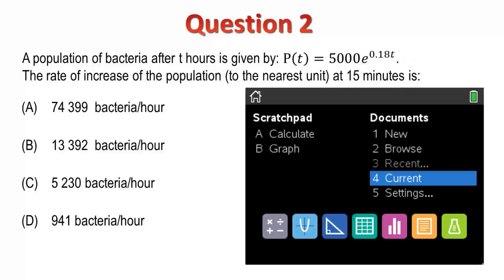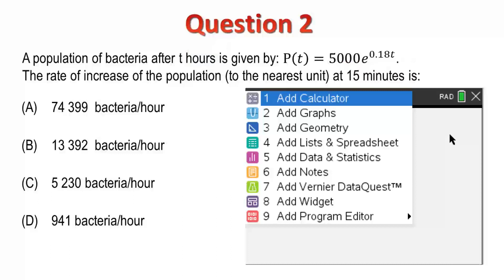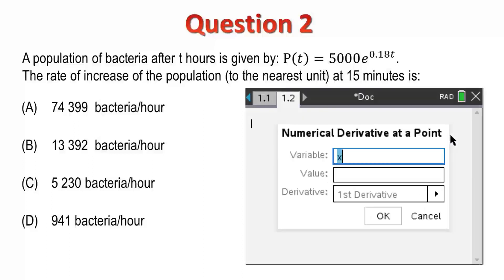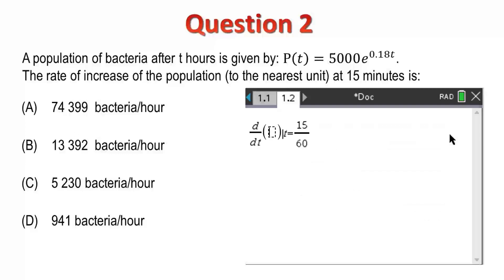I'll add a calculator application to my current document. Then, I'll use the Calculus menu to get the derivative at a point. My variable is T, and here's where I'm being careful. I'm using 15 over 60 as my value of T, and now I just need to enter my function: 5000 e to the power of 0.18t. Press Enter, and I get 941, which is option D.